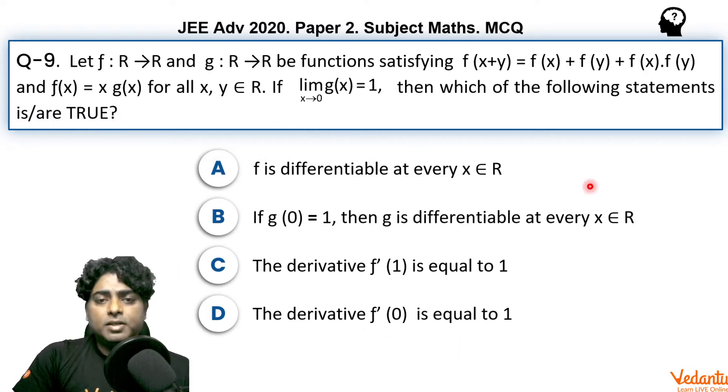One or more options can be correct here. Looking at the options: Option A, f is differentiable at every x belongs to R. Option B, if g(0) = 1, then g is differentiable at every x belongs to R. Option C, the derivative f'(1) is equal to 1. Option D, the derivative f'(0) is equal to 1.